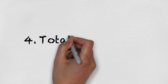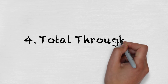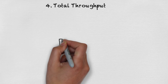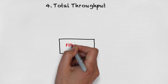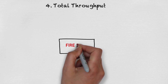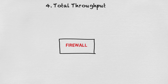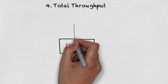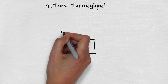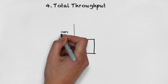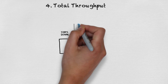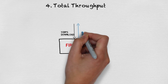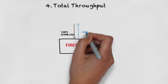Number four: total throughput. The most common place to start when sizing a next-gen firewall is by looking at the total layer four throughput for a given device. But a common mistake is to not calculate traffic in every direction. For example, a 1 gigabit symmetrical circuit is commonly 1 gigabit down and 1 gigabit up, meaning on a fully saturated circuit you can have up to 2 gigabits of theoretical throughput going through your firewall.